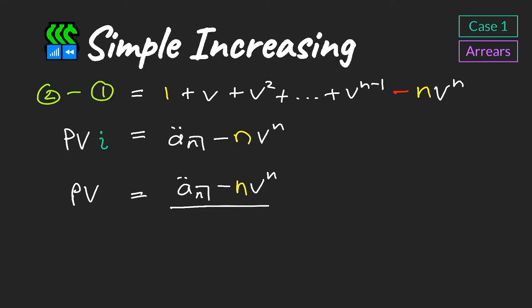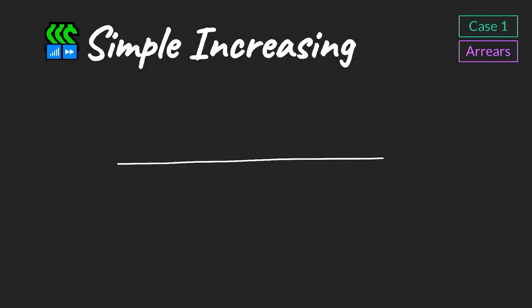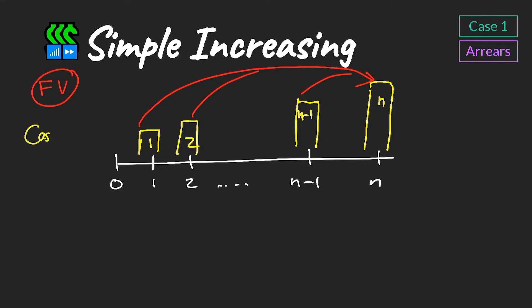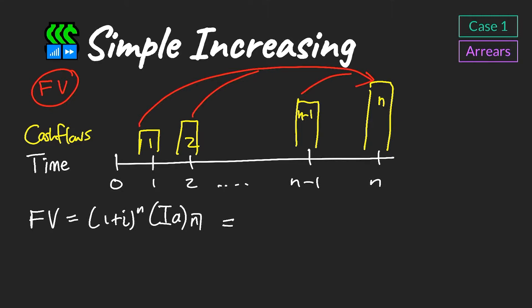This becomes our increasing annuity formula for a period of n where cash flows are paid in arrears. When trying to work out the future value of the same series of cash flows — increasing cash flows paid in arrears for a period of n — we simply find the future value of the present value; in other words, we accumulate the present value for n periods. This can be written out as follows.